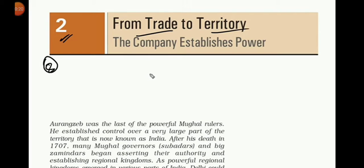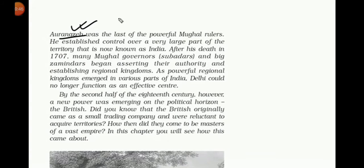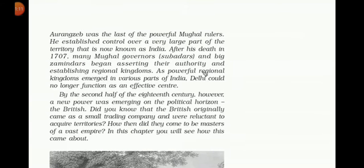Aurangzeb was the last powerful Mughal ruler and he established control over a very large part of territory known as India. But after his death in 1707, many Mughal governors, Subedars, and big Zamindars began asserting their authority and establishing regional kingdoms. His Zamindars and other powerful ministers started to rule in India, and Delhi could no longer function as an effective centre.